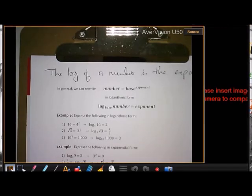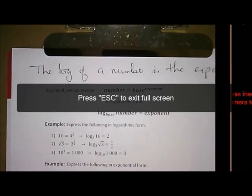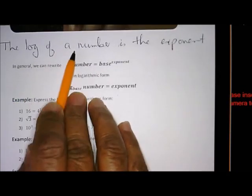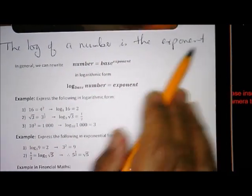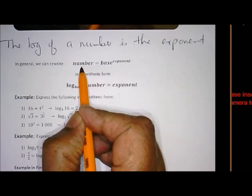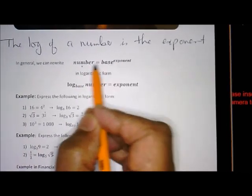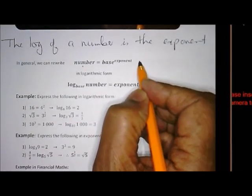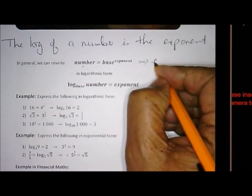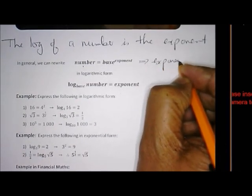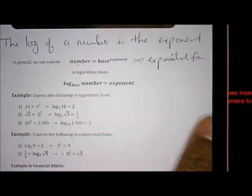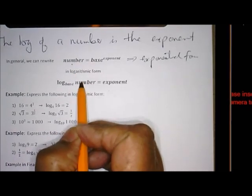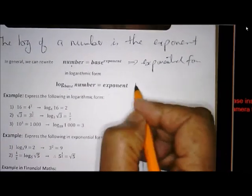Second video. Now I am using that handout I sent you. Remember now the definition: the log of a number is the exponent. So in general we can write: number equals base to the power. So the number you will have a base and the exponent, and of course that is the exponential form. And then in the logarithmic form, remember, the log of the number - and the base goes down there - is the exponent.